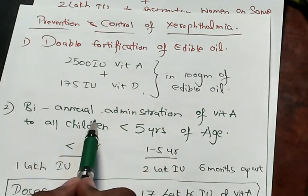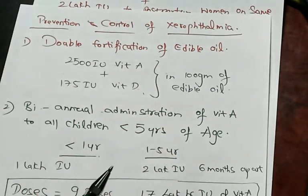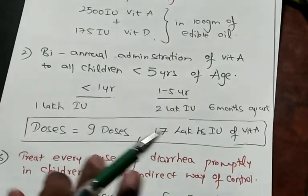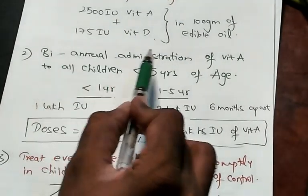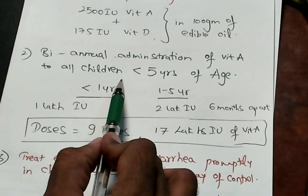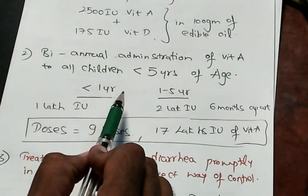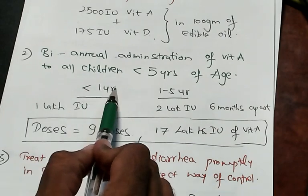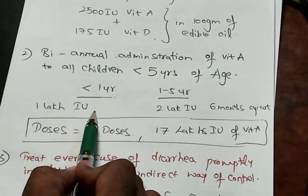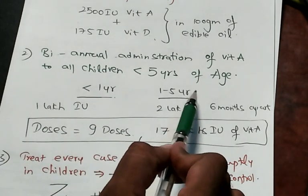The second preventive measure is biannual administration of vitamin A to all children less than 5 years of age. Less than 1 year, we give 1 lakh international units. 1 to 5 years, every year 2 times.